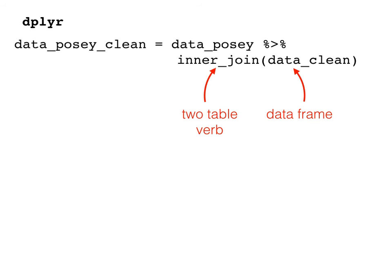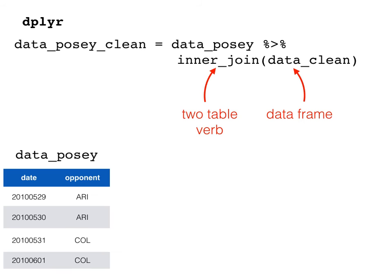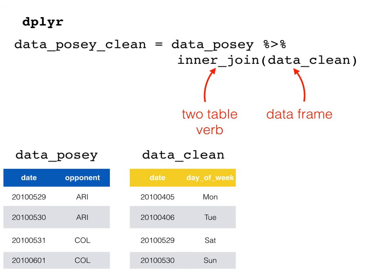Now what exactly is inner join doing? Well, let's start by saying we have a dataframe like data_posey. This represents just a snapshot of the dataframe. We also have a second dataframe, such as data_clean. So what we want to do is combine them. The first thing R will do is look for a column, or columns, that the two dataframes have in common. In our example, it is the date column.